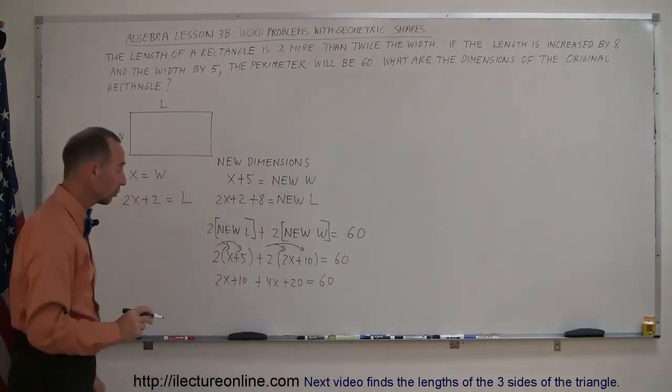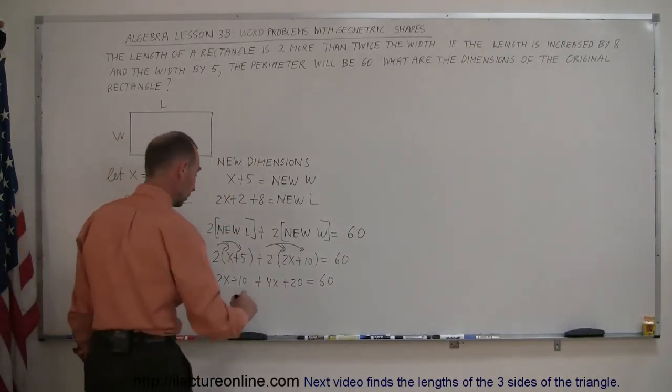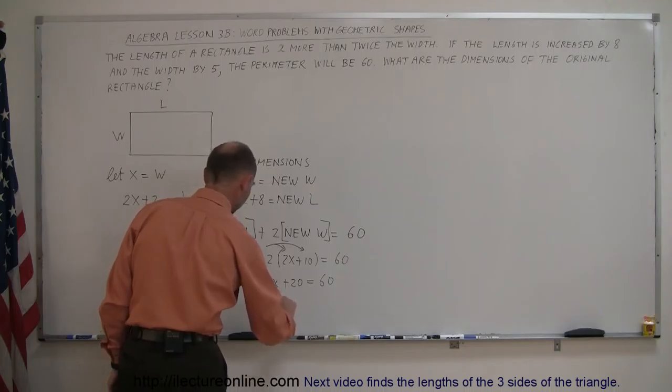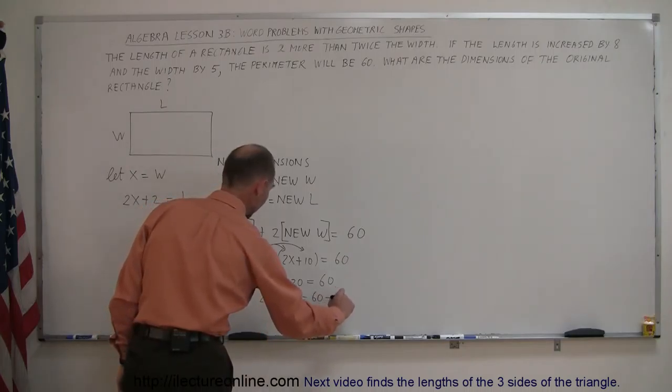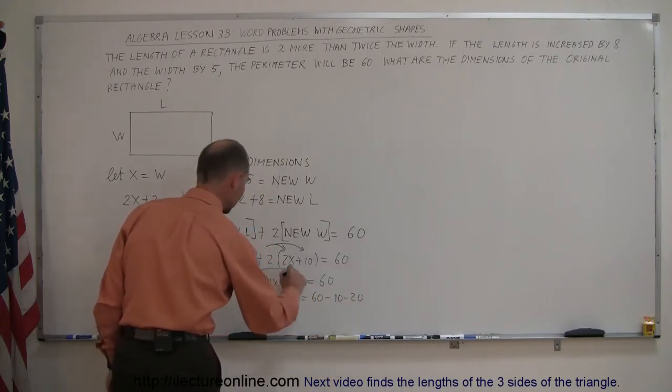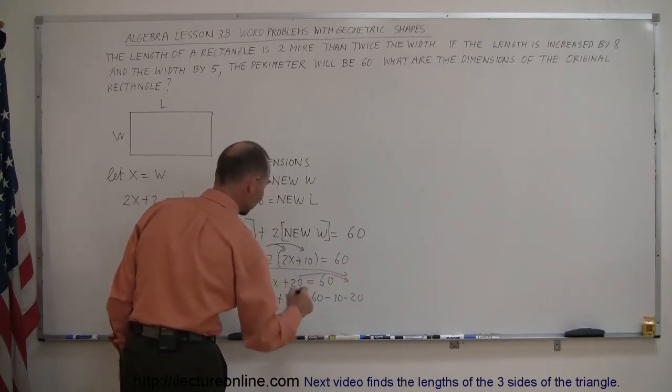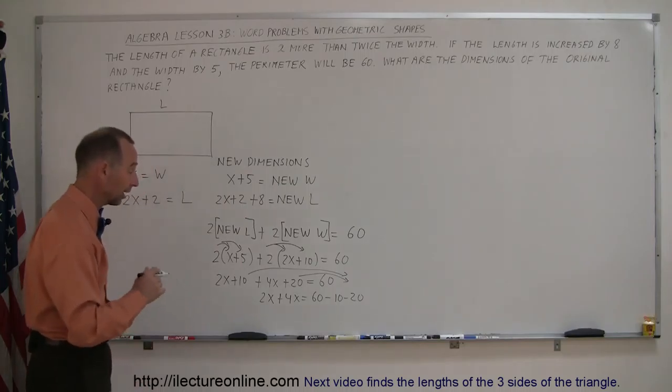Now we move all the terms with the numbers to one side. All the x's stay on the left. So we have 2x plus 4x on the left side equals 60 minus 10 minus 20. I've moved the 10 and the 20 over to the right side. Remember, when you cross the equal sign, the sign changes.